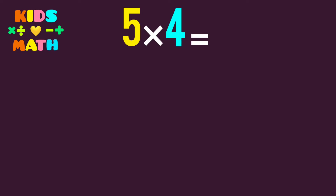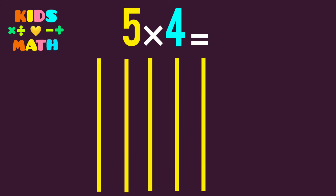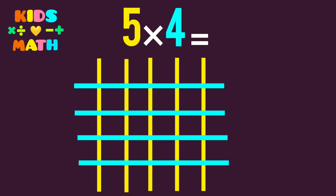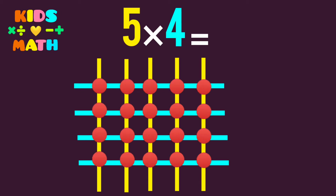5 times 4. The first number is 5, so we derive 5 lines. The second number is 4, so we derive 4 lines. Then we count the common points.